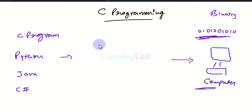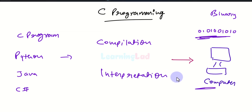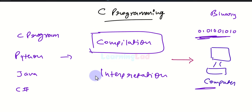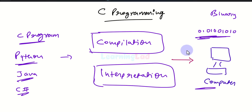This translation can usually be done by two different methods. One is called the compilation method and the second one is called the interpretation method. We will not discuss everything about these two methods in detail here, but both of them take the source code in one language and convert it to another language.